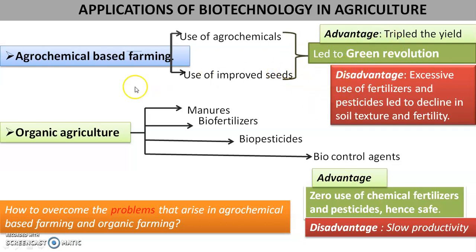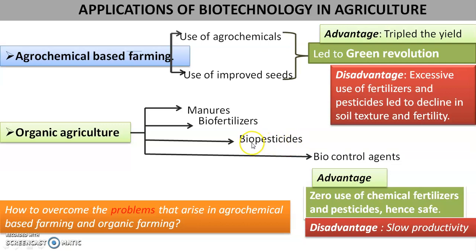So we could not continue with agrochemical-based farming in the long run. The next option was to shift to organic farming with zero chemicals. Farmers started using manure, animal waste, plant materials, and composting. Biofertilizers came up, and even microbes acted naturally as biofertilizers, like cyanobacteria. Biopesticides — toxic material released from an organism — were used to control pests, and biocontrol agents like predators were introduced to control pest prey. Such natural methods were employed.